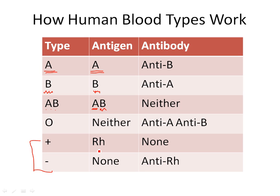Someone who has a negative has no RH antigen on their cells. Antigens serve as an identifier — they let our immune system know what belongs.